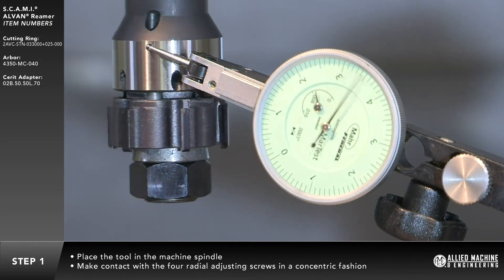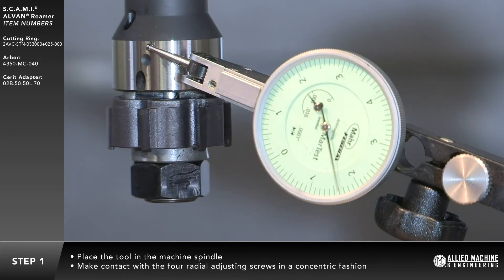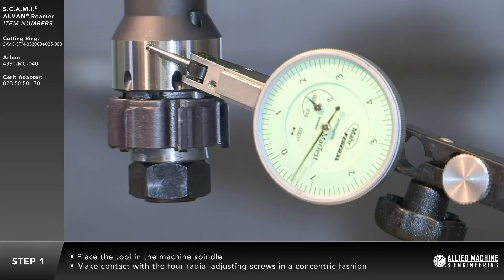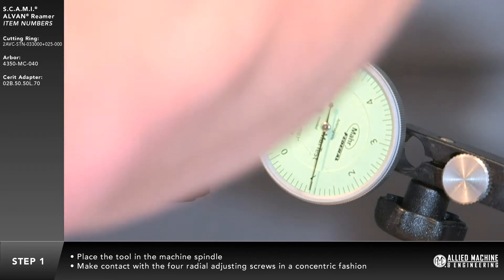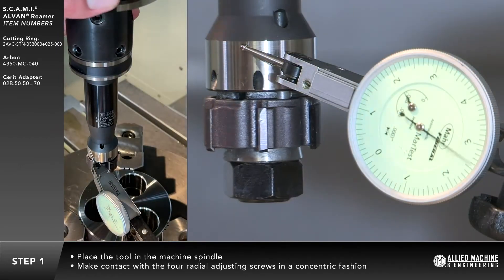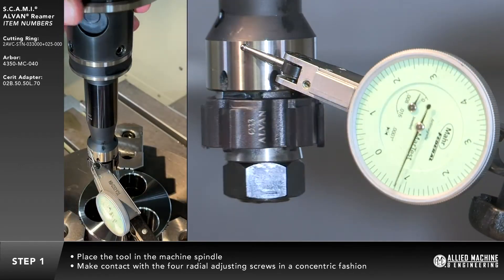Place the tool into the machine spindle. Make contact with the four radial adjustment screws in a concentric fashion. This results in equal pressure surrounding the tool.